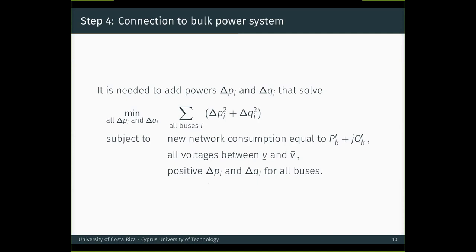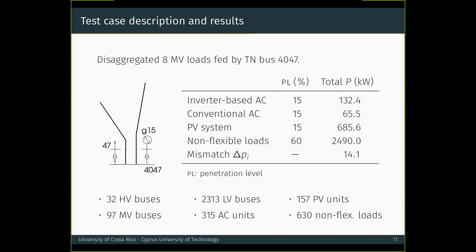We then applied this four step methodology to a transmission distribution system and in this way come to our results. We disaggregated eight medium voltage loads fed by transmission bus 4047. And we allocated inverter based and air conditioning and conventional air conditioning units, PV systems and non-flexible loads with the penetration levels shown in the center column and that amounted to the powers shown on the right. It's important to note that this system, only by disaggregating eight medium voltage loads, we had more than 2300 low voltage buses.